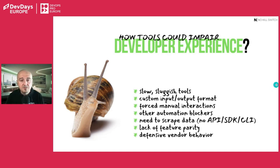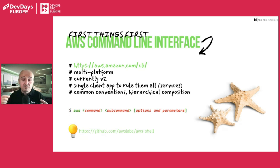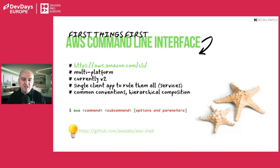Let's start with something everyone knows — the AWS Command Line Interface. It's basically your Swiss Army knife if you work with AWS. It's multi-platform, it's one single client for almost 300 AWS services, so you don't need to download specific modules. Regardless of which service you work with, you have pretty much the same conventions — commands, subcommands, the same naming patterns — which is quite nice.